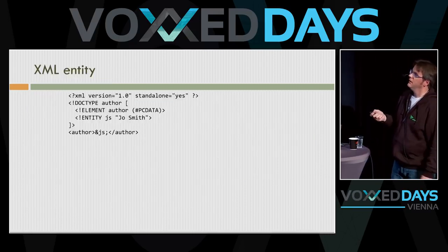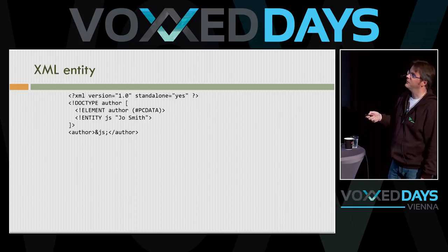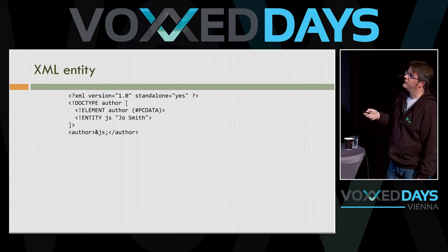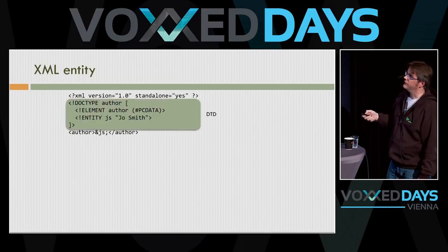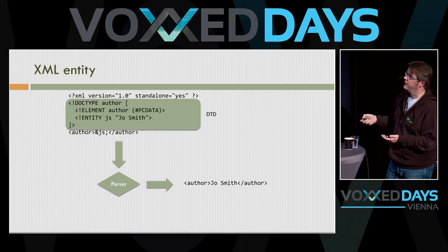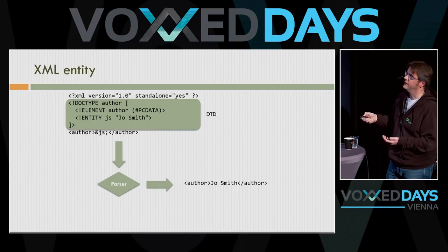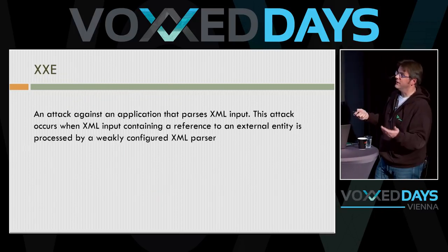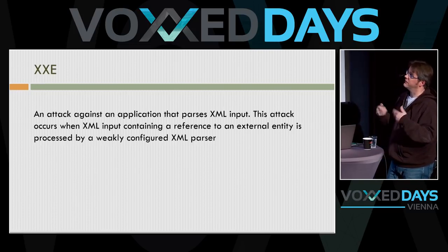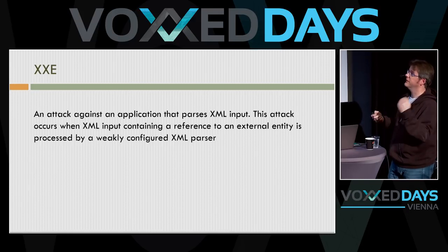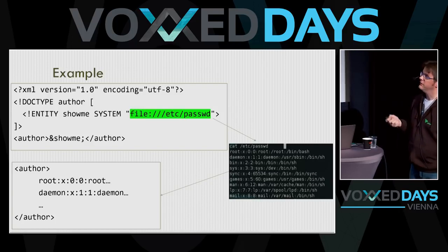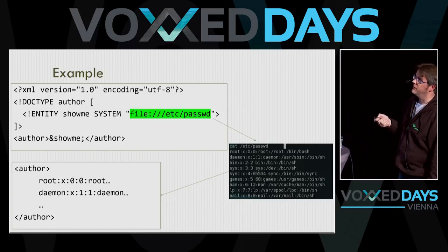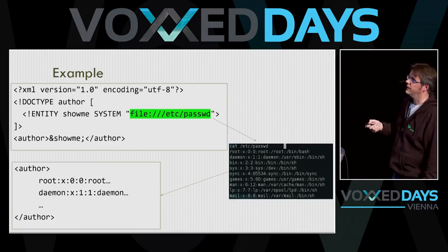What is an XML entity? You define a DOCTYPE, say the entity 'js' is 'Joe Smith,' and reference it in the author field. The parser replaces it with 'Joe Smith' everywhere. An XML external entity attack is when an attacker parses XML input that references an external entity. For example: you define an entity called 'show' that reads the file /etc/passwd from the server, and the parser fetches that file and puts it into the XML message returned to the client.